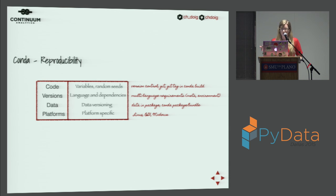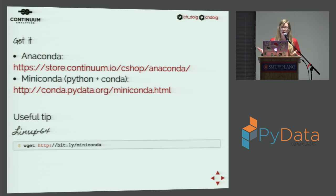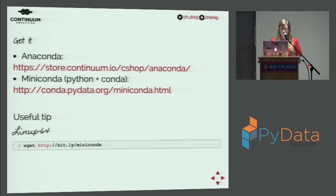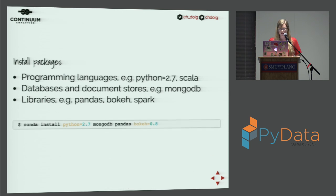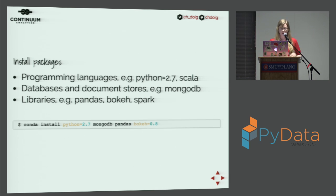How do you get Conda? Either with Anaconda — which downloads all the scientific and data analysis packages — or just with Miniconda. A useful tip for setting up Linux machines: use wget to download the latest Linux 64 Miniconda. You can install Python 2.7, Scala, databases like MongoDB, or libraries like Pandas, Bokeh, and Spark. The command is simply `conda install [package]`. You can include specific versions; if you don't, you get the latest stable version.